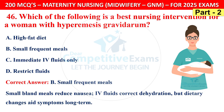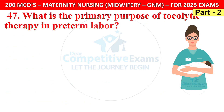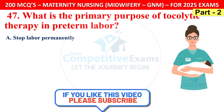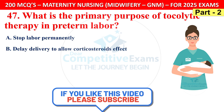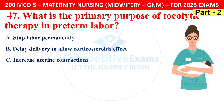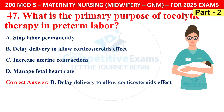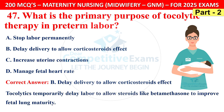Question 47: What is the primary purpose of tocolytic therapy in preterm labor? Options are to stop labor permanently, delay delivery to allow corticosteroid effect, increase uterine contractions, or manage fetal heart rate. The correct answer is B — delay delivery to allow corticosteroid effect. Tocolytics temporarily delay labor to allow corticosteroids like betamethasone to improve fetal lung maturity.